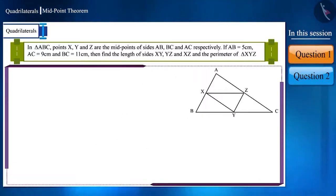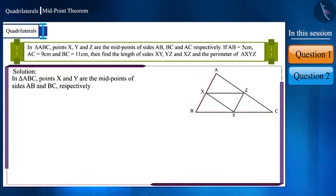Let's see. Friends, we are given that in triangle ABC, points X and Y are the midpoints of sides AB and BC respectively. If we use the midpoint theorem here, then we can say that the line segment XY is parallel to side AC and equal to half its length.